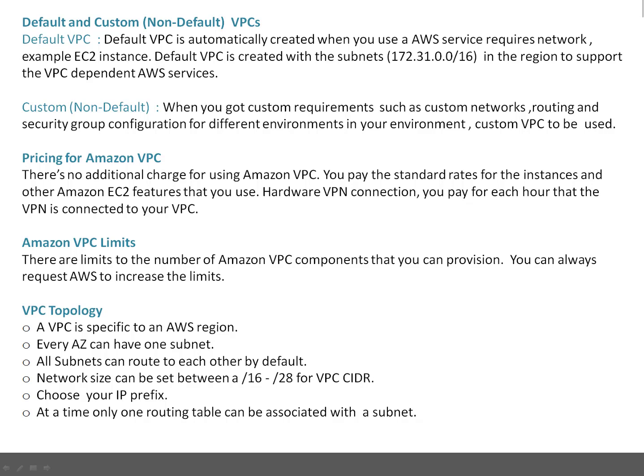What is the pricing for Amazon VPC? There is no additional charge for using the Amazon VPC service itself. You pay the standard rates for the instances and other Amazon EC2 features you use — meaning you only pay for the services that need VPC. The only exception is if you're using a hardware VPN connection — you pay for each hour that VPN is connected to your VPC.